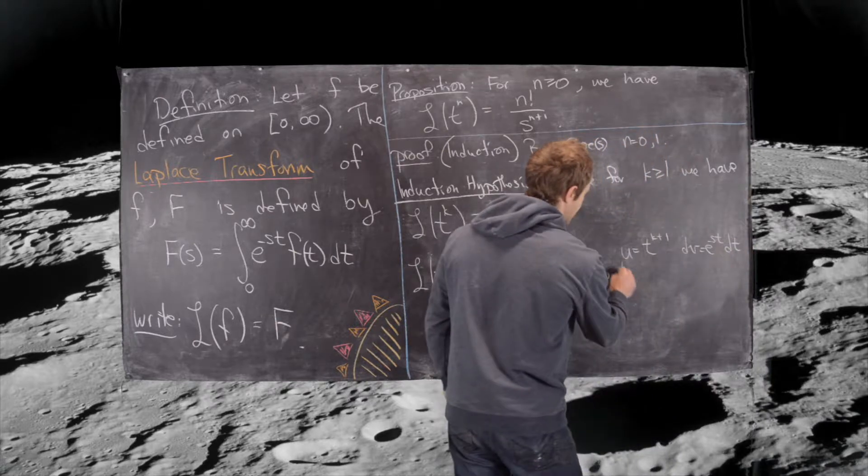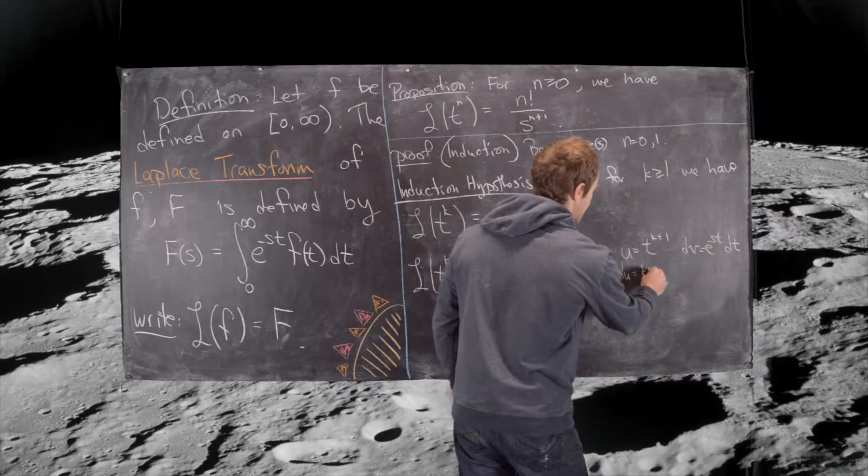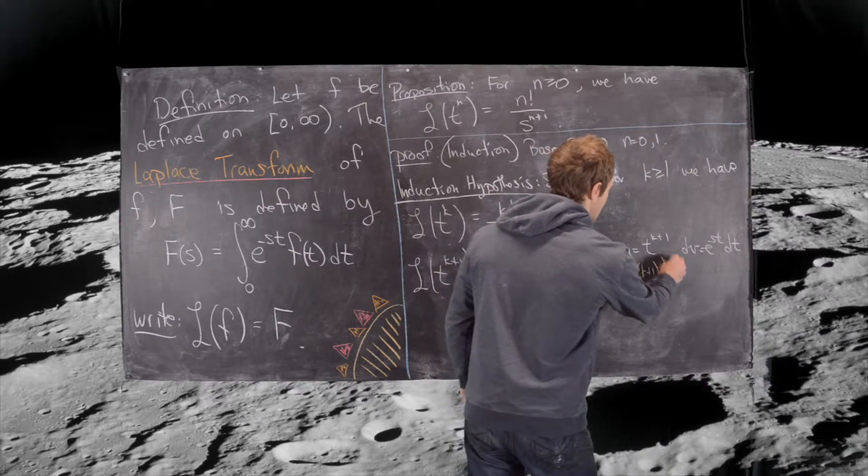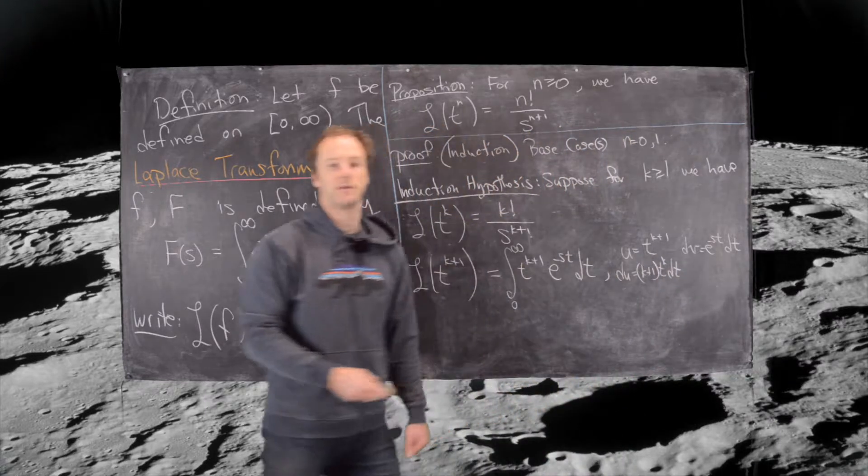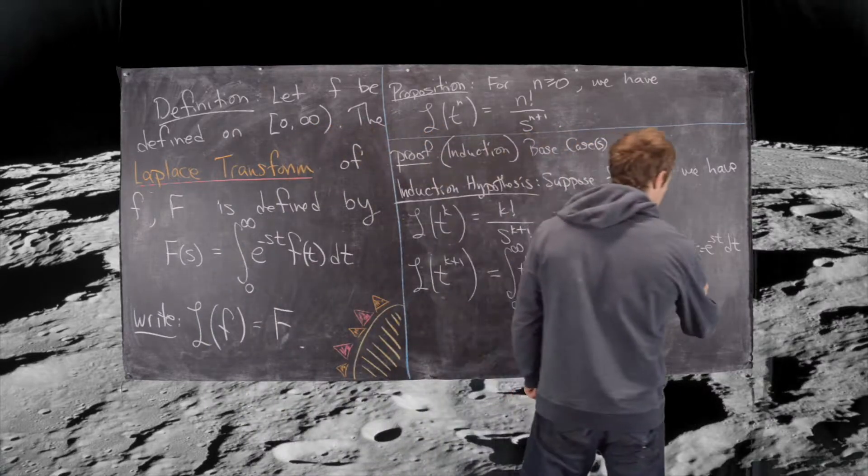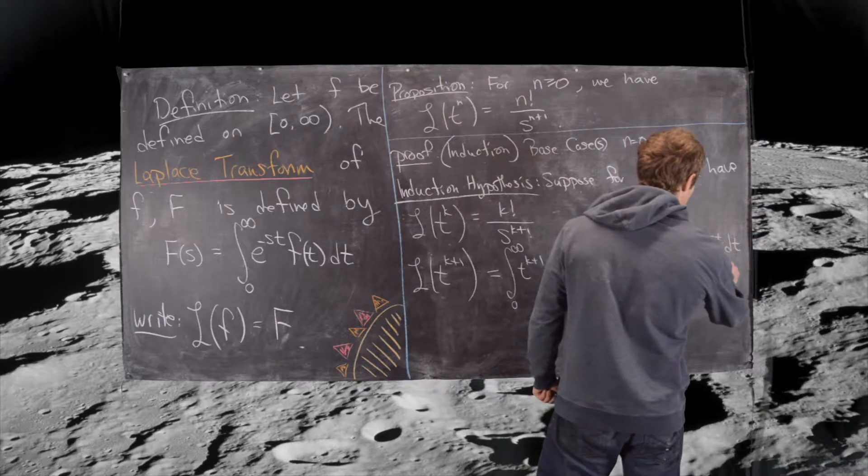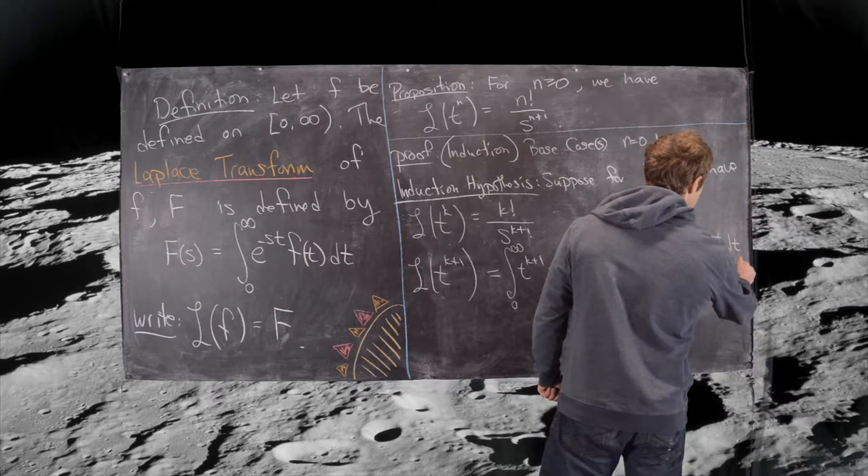So that's going to give us du equals k plus 1 times t to the k dt, and that's going to allow v to be equal to minus 1 over s times e to the minus st.